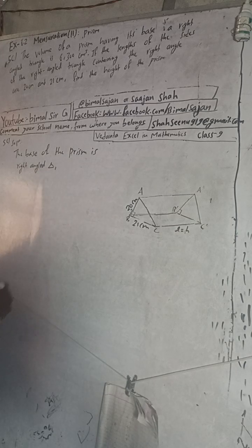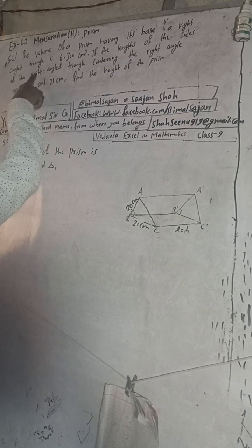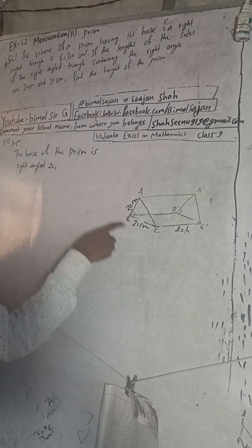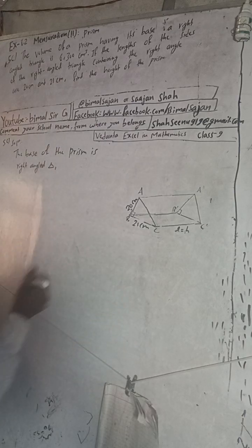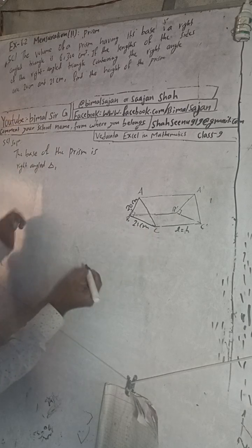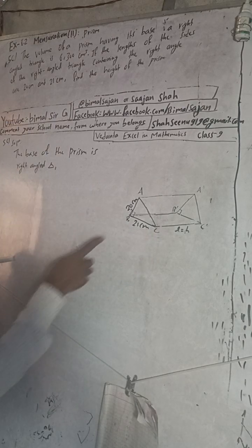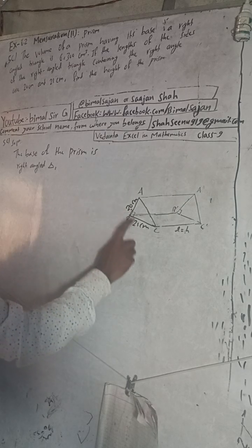And the question says: if the length of the sides of the right angle triangle - the sides containing the right angle are 20 degrees - containing right angle means this and this, the sides containing the right angle are 20 or 21. You can consider this 20.